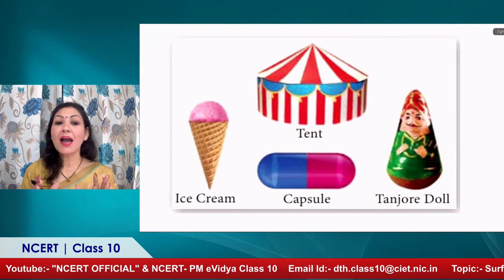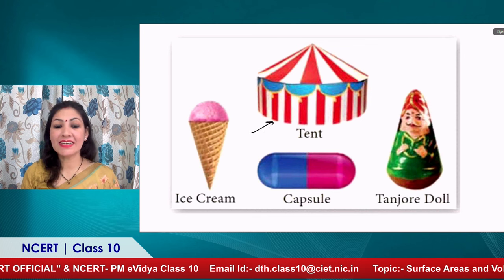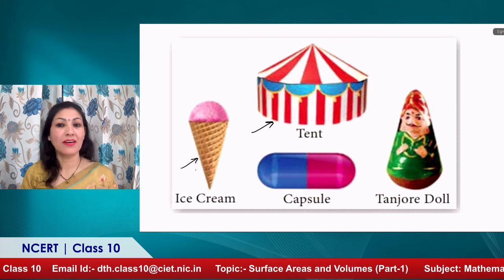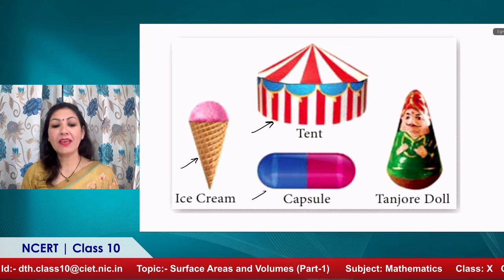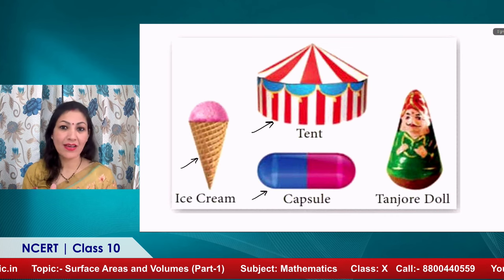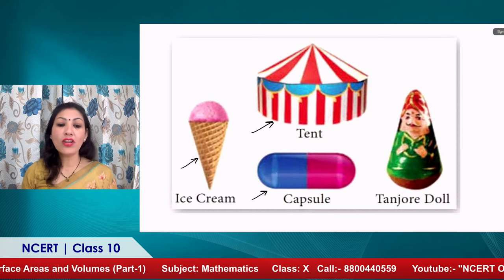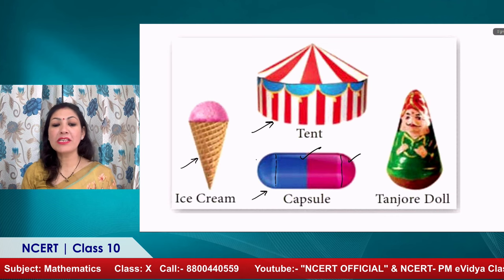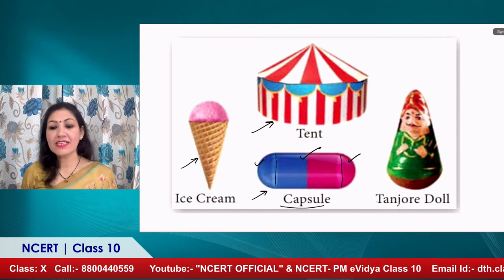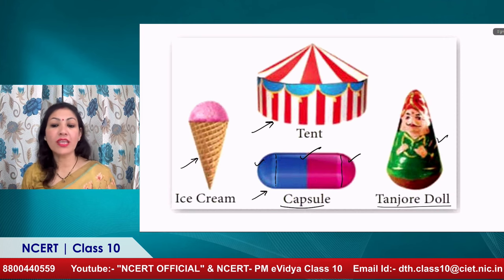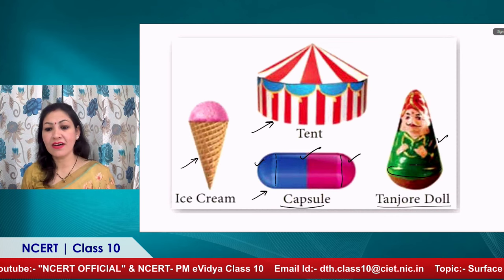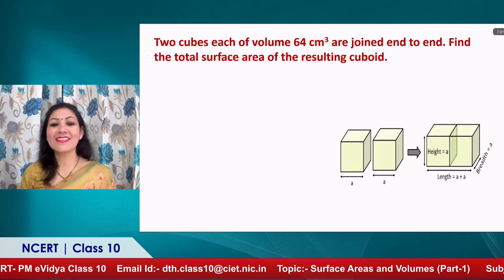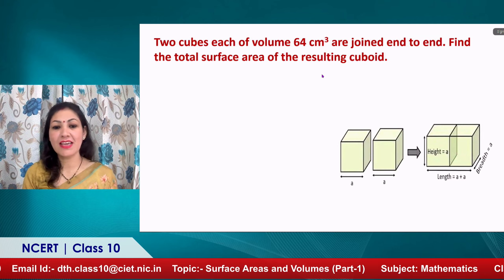Now let us discuss combined shapes. You can see this tent shape, this ice cream cone shape — as Harpreet ji mentioned at the beginning. You can also see a capsule: its middle portion is cylindrical and both ends are hemispheres. Similarly, this toy doll is conical with a hemisphere at the bottom. Let us discuss how to find the volume or surface area of these shapes.